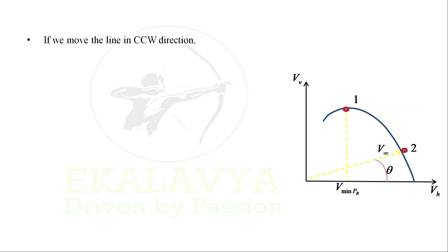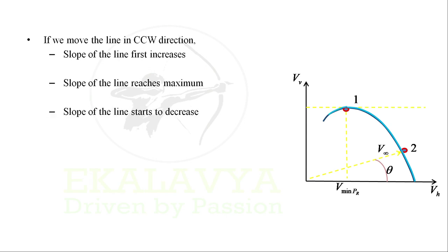If we move the line in counterclockwise direction, slope of the line first increases, slope of the line reaches maximum, then slope of the line starts to decrease. The line becomes tangent at point 3 where we have our maximum climb angle.